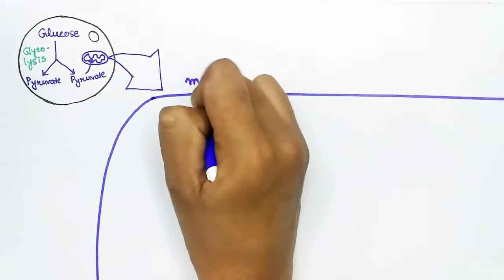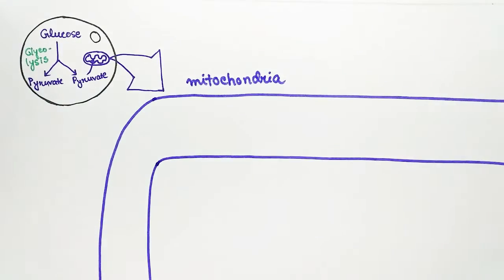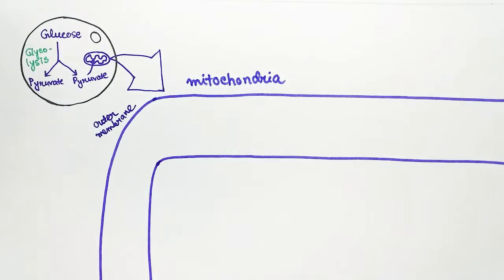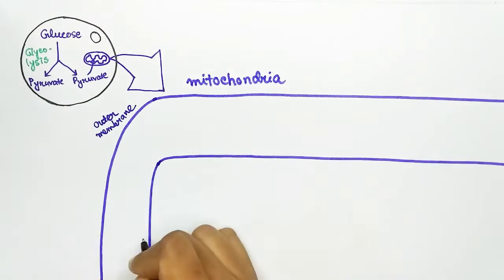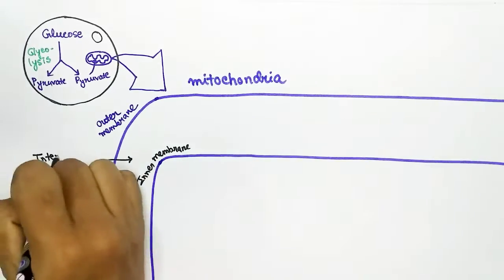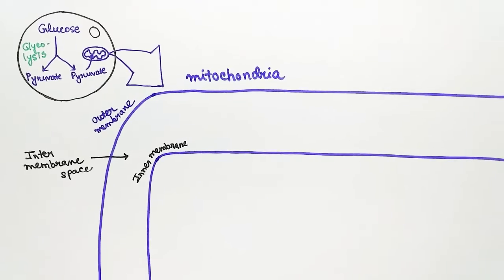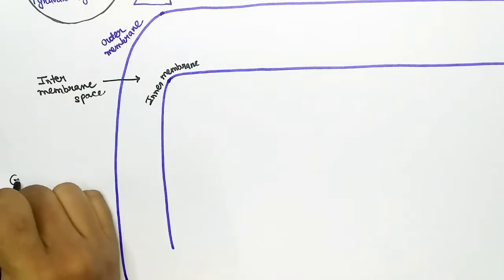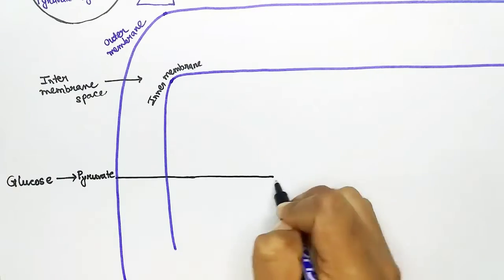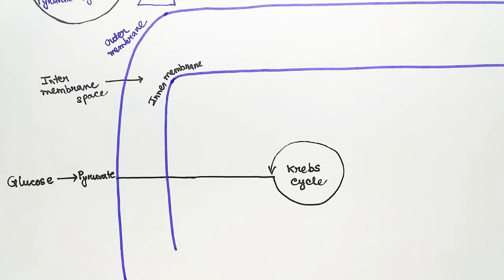Mitochondria has two membranes: one is the outer membrane and the other is the inner membrane, and in between the outer and inner membrane the inter-membrane space is present. Glycolysis occurs in the cytoplasm, where glucose breaks down into pyruvate, and the pyruvate molecule then enters the mitochondria.